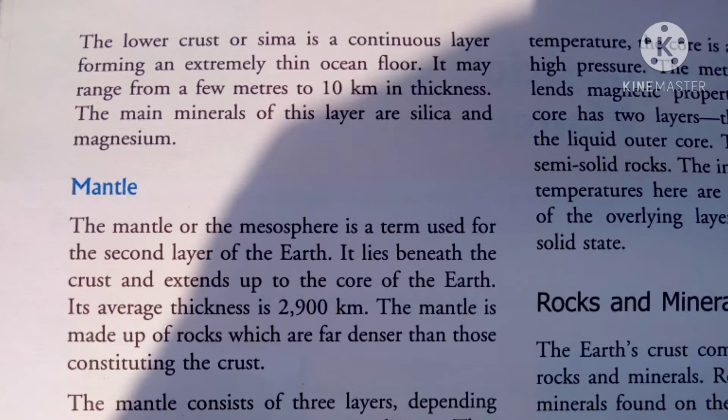The lower crust is a continuous layer forming an extremely thin ocean floor. It may range from a few meters to 10 km in thickness. The main minerals of this layer are silica and magnesium.